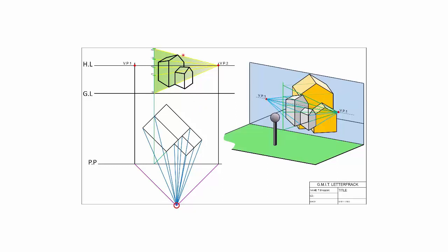It's often quite useful to keep your construction lines light at the beginning, then darken in exactly what you want to see afterwards to tidy up the question. As you can see, we've created one plane using one height line and every single height has been located on that. One height line has done an awful lot in this particular case. We could have taken numerous height lines and used them individually — the only difference is a little extra work. As usual, I hope you find this useful and hopefully we'll see you again soon. Take care.